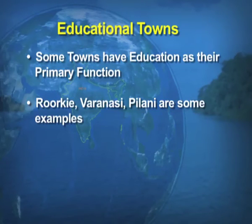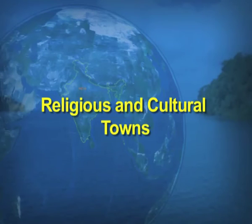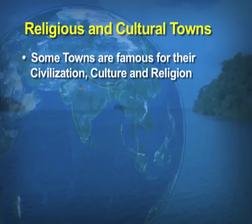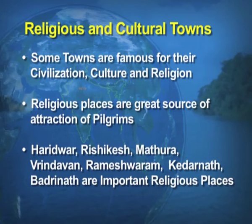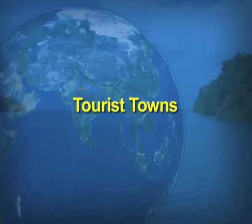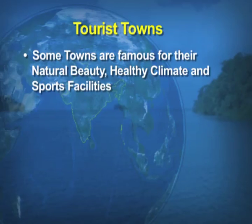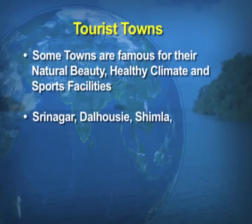Educational towns provide educational facilities to students — for example, Varanasi and Roorkee. Religious and cultural towns are famous for their civilization, culture, and religion, and they attract tourists — for example, Haridwar and Rishikesh. Lastly, tourist towns are famous for their natural beauty, health climate, and other facilities — examples include Srinagar, Dalhousie, Shimla, and Kullu.